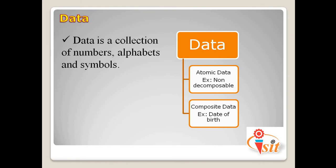Atomic data is non-decomposable. For example, consider the integer value 523, or the character value 'A'. If we consider the three digits 5, 2, 3 separately, the meaning may be lost. Similarly, the character 'A' cannot be divided further. So atomic data means data which is non-decomposable.